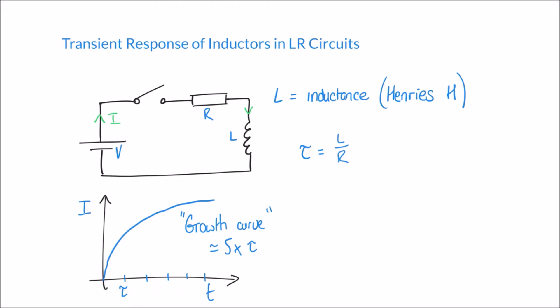Once five time constants have elapsed, the current has reached its maximum value and will remain at that steady-state current until the circuit is switched off. To calculate the steady-state current, when the inductor is allowing the full value of current to flow we can simply think of the circuit as a voltage source and a resistor. The steady-state current — expressed as I_ss — is calculated using Ohm's law: I_ss = V / R.